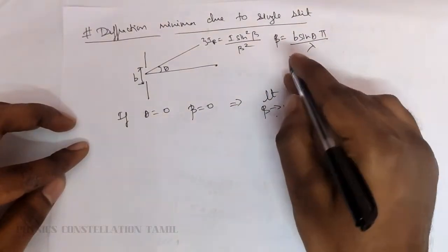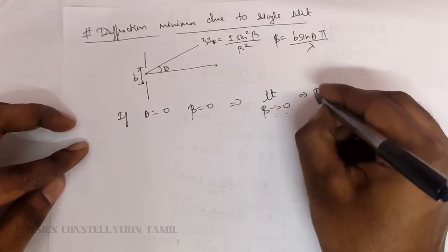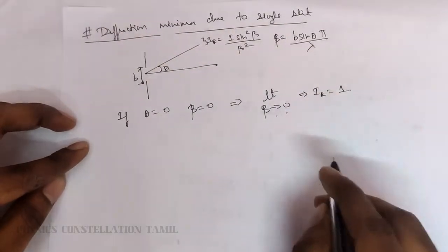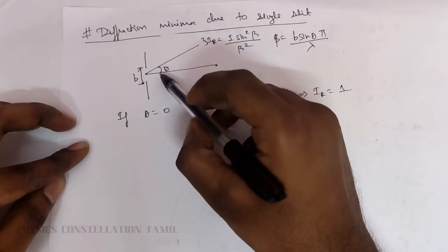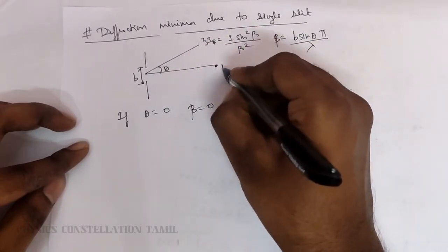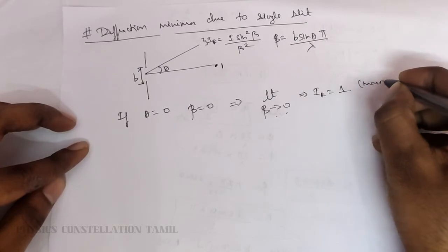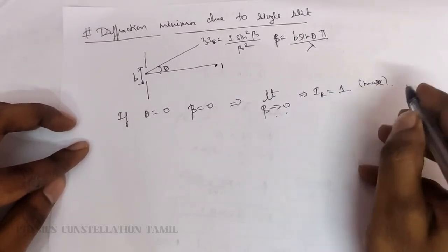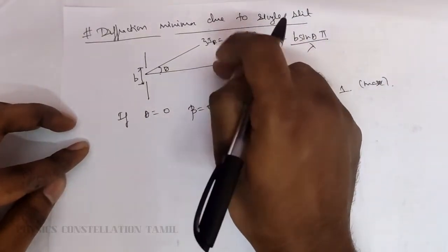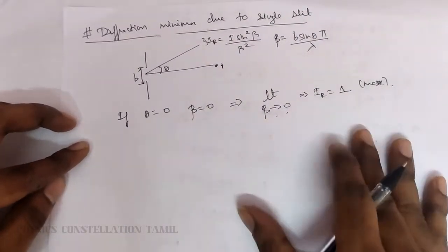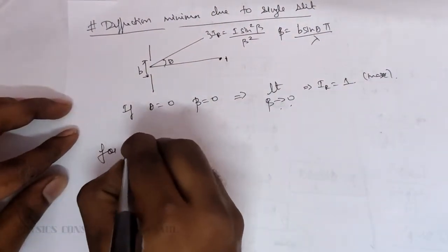When beta is approaching zero, the overall resulting intensity becomes I₀ — maximum. So when the angle is zero, the resulting intensity is maximum — this corresponds to constructive interference, a bright fringe (central maxima).